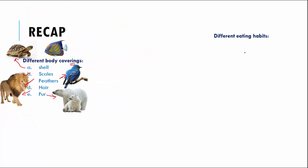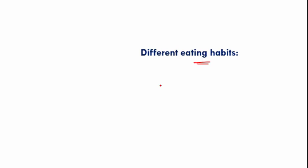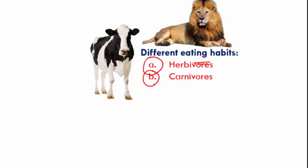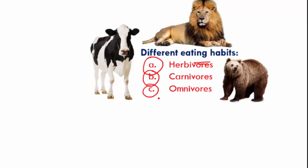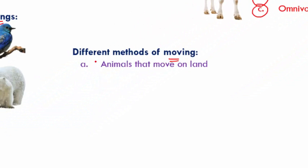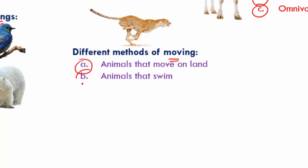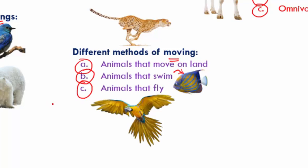Then we covered different eating habits — three kinds: herbivores, carnivores, and omnivores, which eat everything. We then looked at methods of movement: animals that move on land like the cheetah, animals that swim like the fish, and animals that fly like birds and insects. We also looked at birds that cannot fly — ostrich, penguin, and emu.